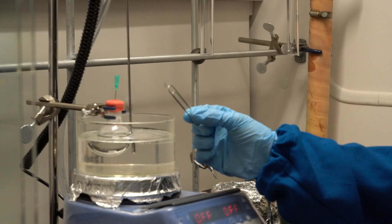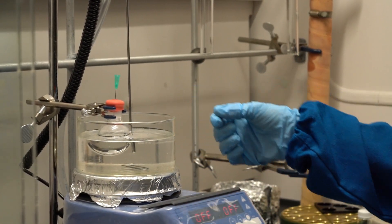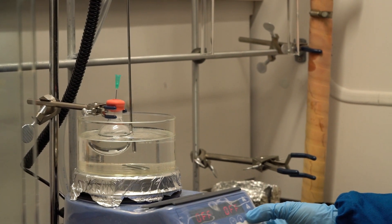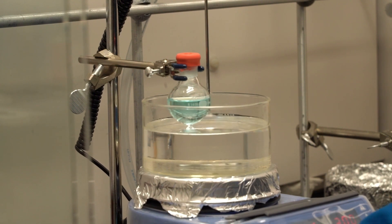A lab hack to ensure even heating is stirring the oil bath with a paperclip. As it rotates, the oil will circulate, but the paperclip is small enough to not hit your flask.